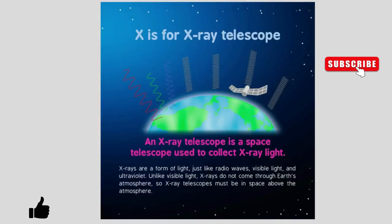X is for X-ray Telescope. An X-ray telescope is a space telescope used to collect X-ray light. X-rays are a form of light just like radio waves, visible light, and ultraviolet. Unlike visible light, X-rays do not come through Earth's atmosphere, so X-ray telescopes must be in space above the atmosphere.